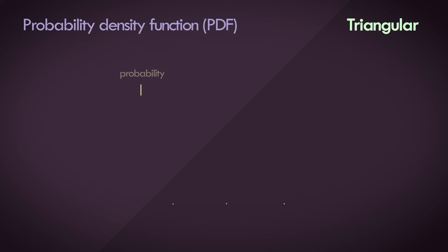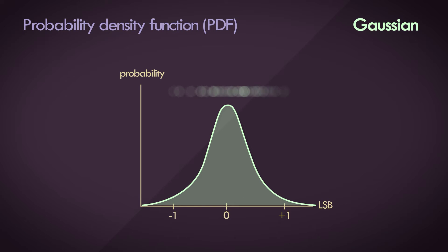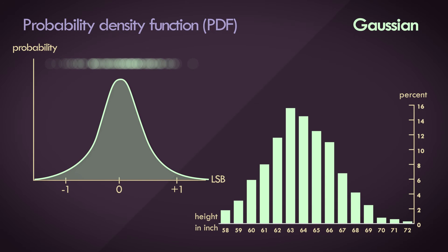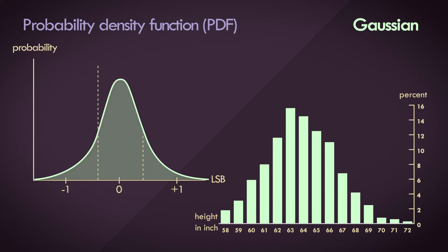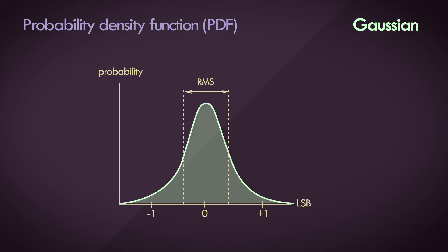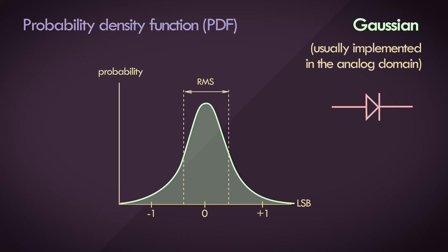The last PDF we're going to discuss is the Gaussian PDF, or normal PDF. An example would be the height of people in a given population — some may be very short, some extremely tall, but most people have an average height and fall somewhere in the middle of the distribution. The shape of the Gaussian PDF is determined by the RMS value, sometimes called the standard deviation. Gaussian dither is easy to implement in the analog domain — a simple diode can be used as a noise source. In fact, an explicit dither signal is often not needed in the analog domain, since electronic components produce enough noise to self-dither.